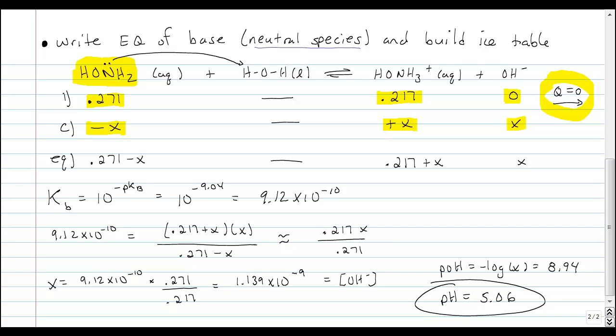Now, we were given the pKb, not the Kb, and to undo a log, which is what a p is, the p function is a log, we've got to do a 10 to the operation. So that's what I've done here. I've actually found the Kb by just raising the pKb to the 10 to the minus of that power. So it comes out to be 9.12 times 10 to the minus 10.